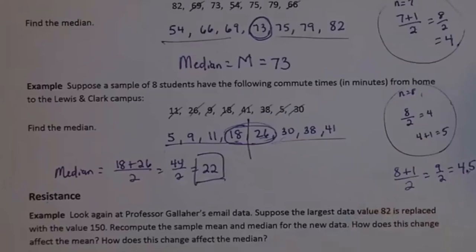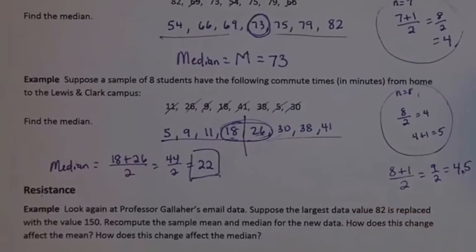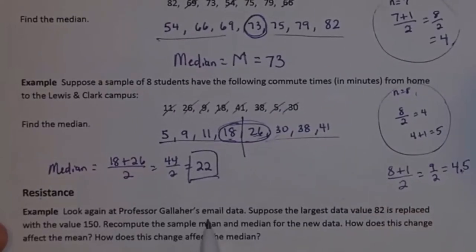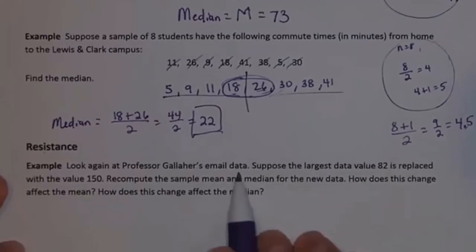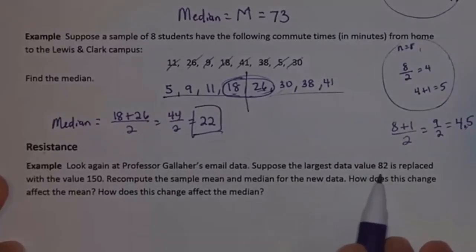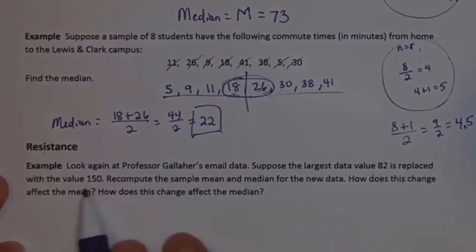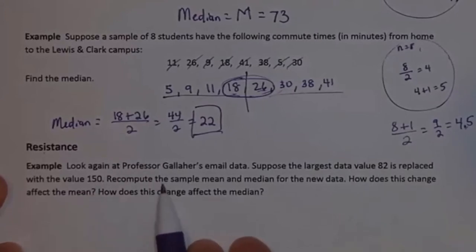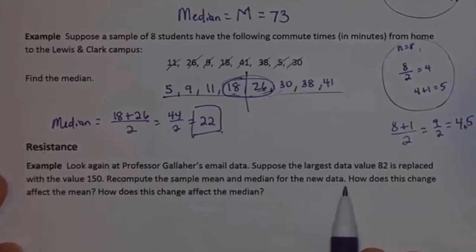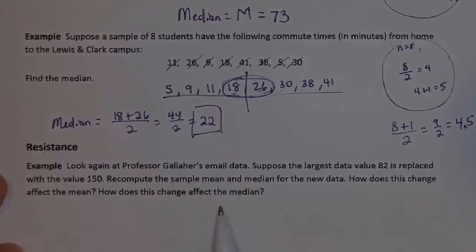The next concept is the notion of resistance. Look again at Professor Gallagher's email data. Suppose the largest data value, 82, is replaced with the value 150. Recompute the sample mean and the median for the new data set. How does this change affect the mean, and how does this change affect the median?